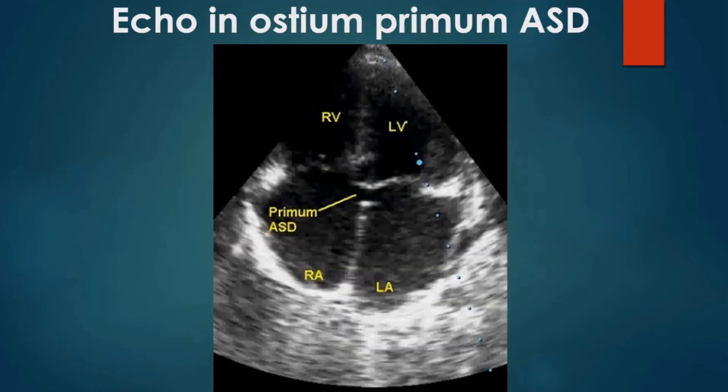Echocardiogram in apical four-chamber view demonstrates a primum atrial septal defect. Primum ASD is part of the AV canal defect and is sometimes called a partial AV canal defect. In AV canal defects, the AV septum is absent and both AV valves are at the same level. Primum ASD is usually associated with a cleft of the anterior mitral leaflet, which appears like an additional commissure in the parasternal short axis view. Cleft AML produces significant mitral regurgitation. A similar defect in the tricuspid valve can cause tricuspid regurgitation.